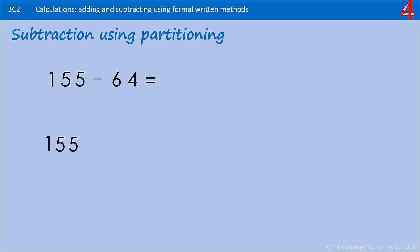We're still going to partition the 64 as we did earlier, so pause the video and see how you get on. 64 is partitioned as: take away 60, take away 4. Putting that in the column and starting with taking the 4 away this time, just to show you that it doesn't matter which way round we do this.